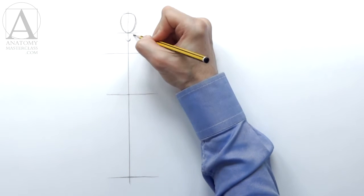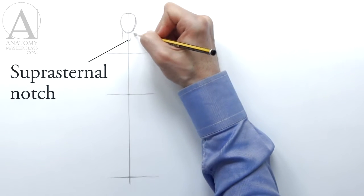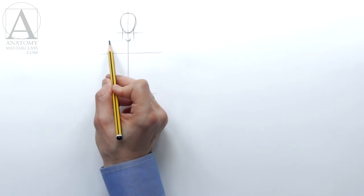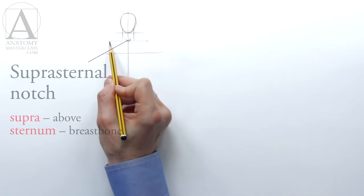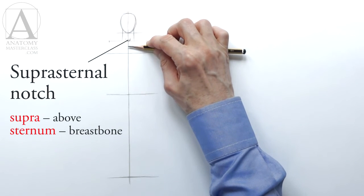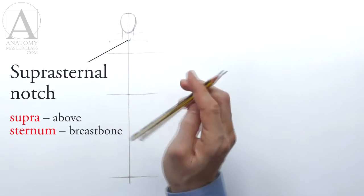At the base of the neck there is a notch, which is called the suprasternal notch. It is located just above the breastbone. The Latin name, suprasternal, comes from two words: supra, above, and sternum, breastbone.